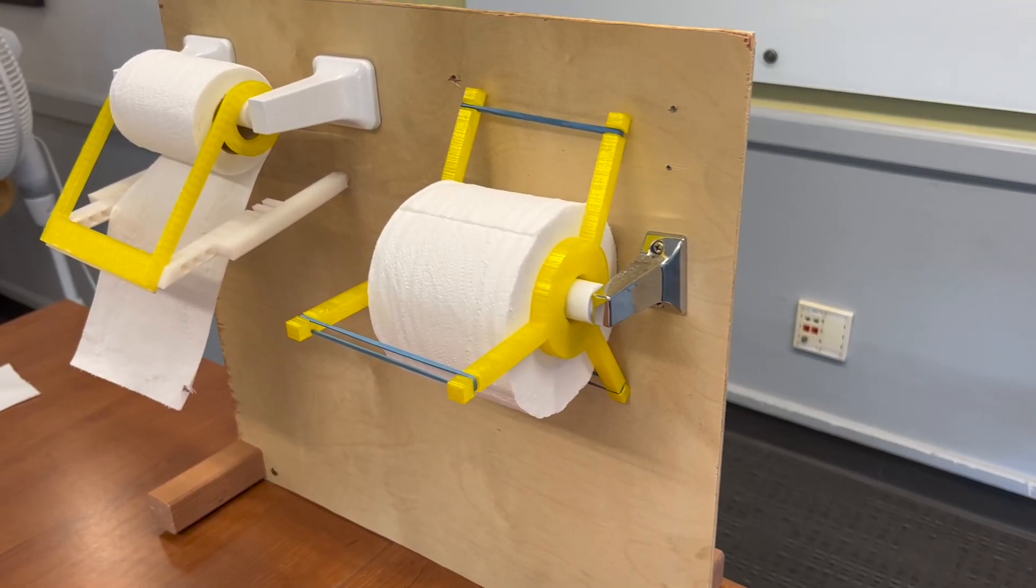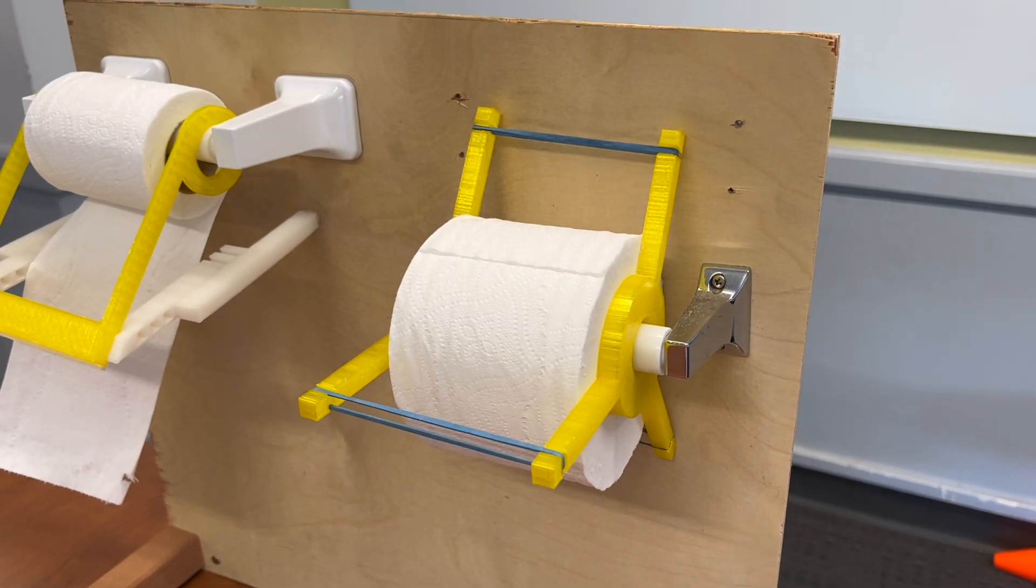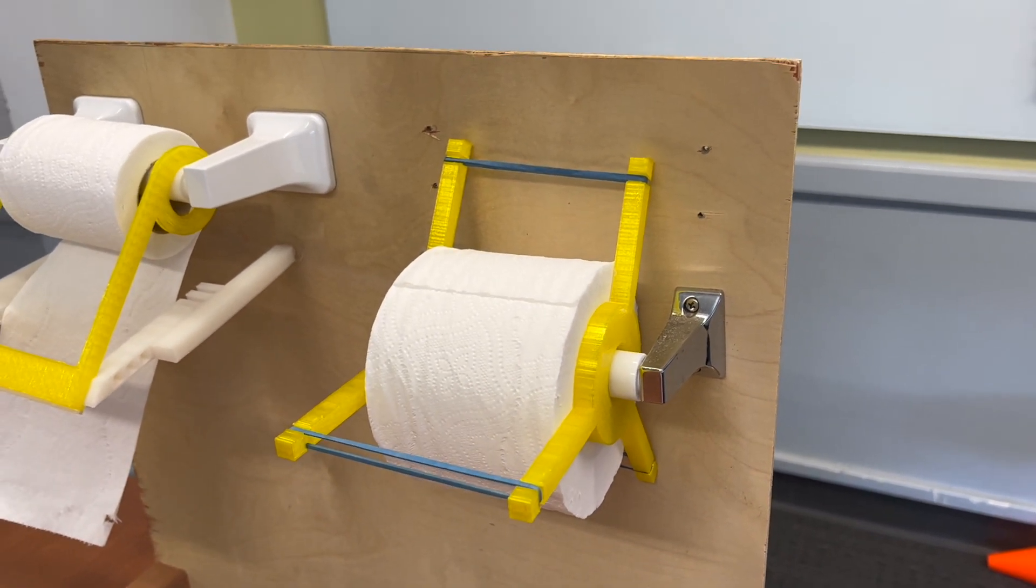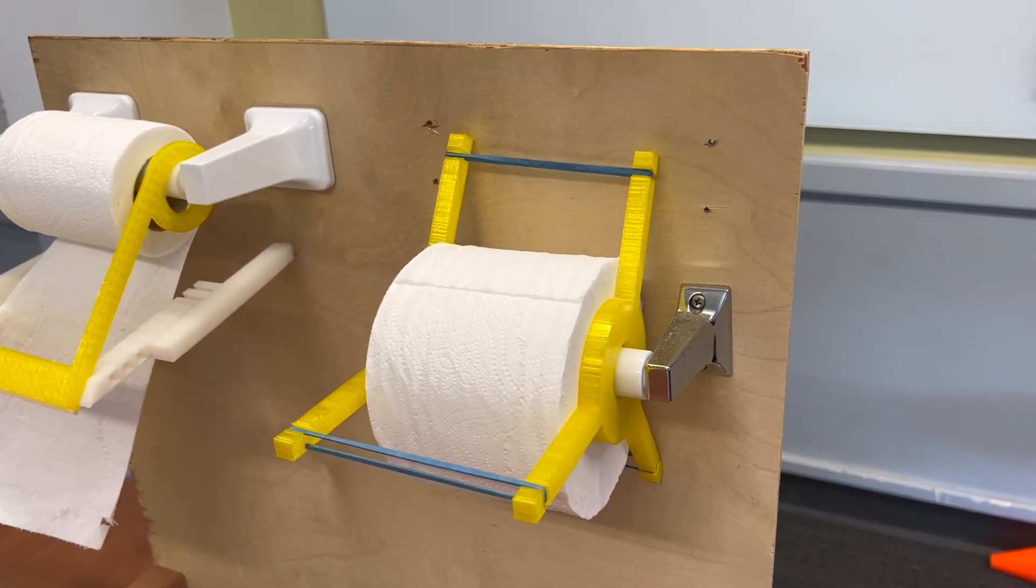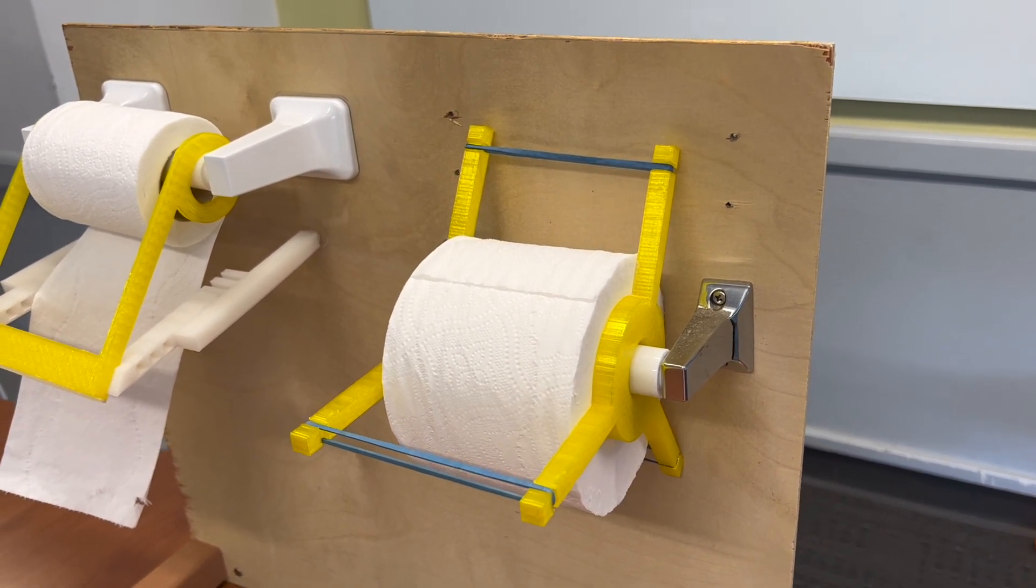On this side, we have the EZ Roll squeeze. This is basically inspired by some of those paper towel holders where they apply friction to the paper towel roll, and thus you can tear it with just one hand.